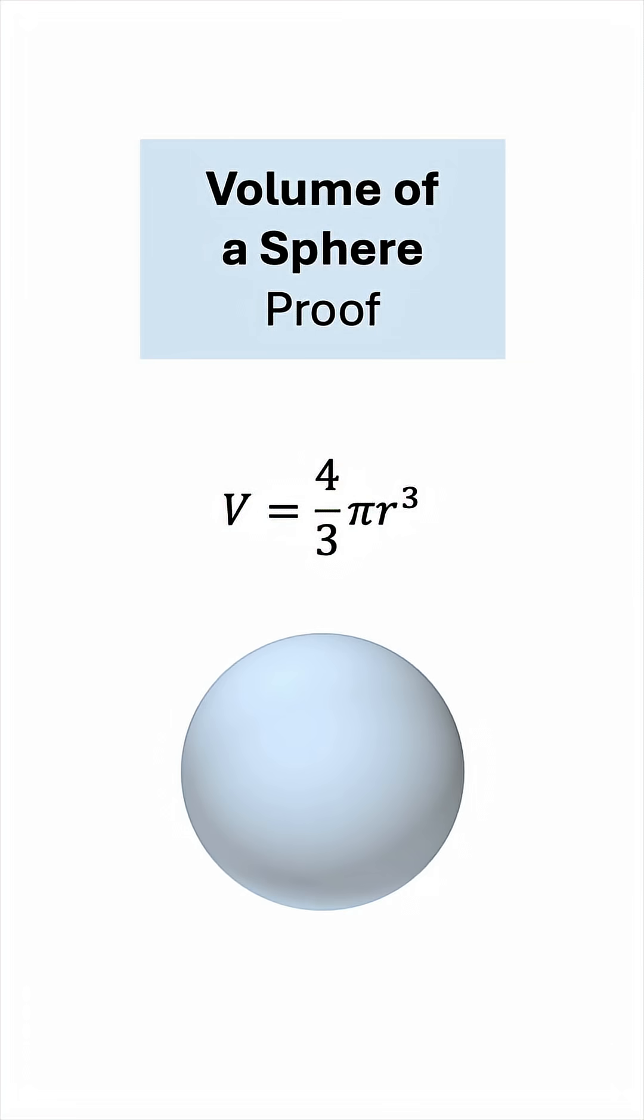We know that the volume of a sphere is 4 over 3 pi times its radius cubed. But where does this come from? Let's prove it.